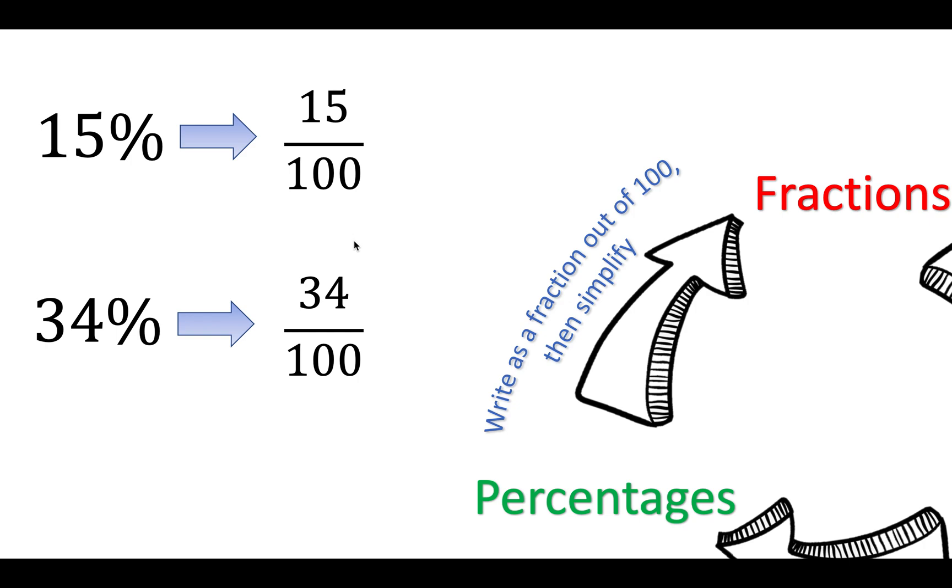So we simplify the top one. We can divide the top and bottom by five, and we get three out of twenty, three twentieths. And we're back to the start of our fraction. Now, we've got thirty-four out of a hundred. We can divide by two and divide by two, and we get seventeen out of fifty.